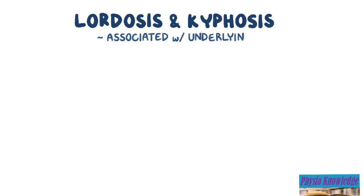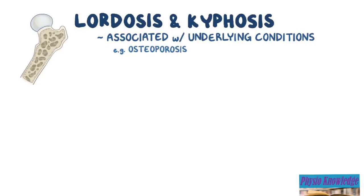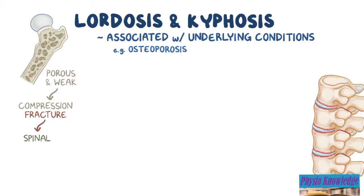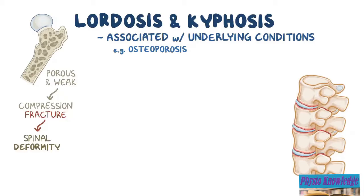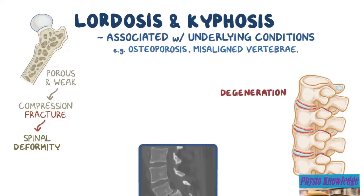Lordosis and kyphosis are typically associated with underlying conditions. For example, in osteoporosis, the bones become porous and weak, and can develop compression fractures causing the bones to collapse a little bit. This can cause a spinal deformity, and can also impinge on nearby nerves. Misaligned vertebrae can also exert too much pressure on the intervertebral discs, causing them to degenerate.